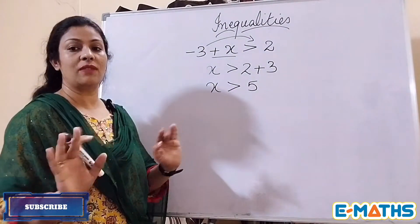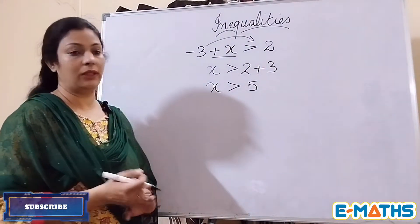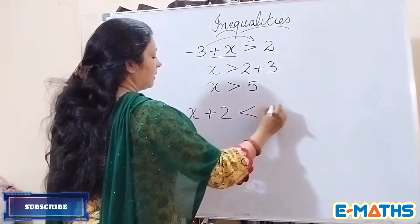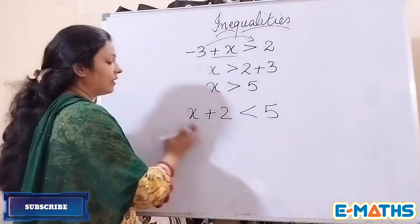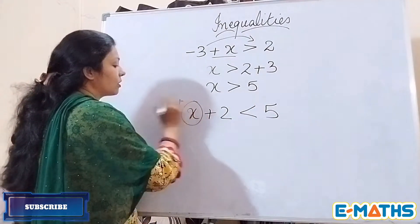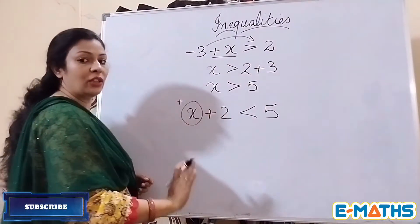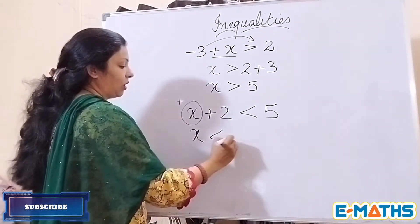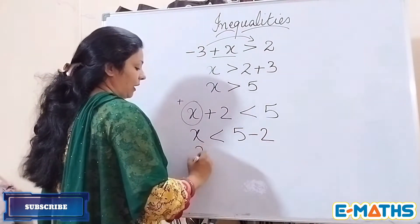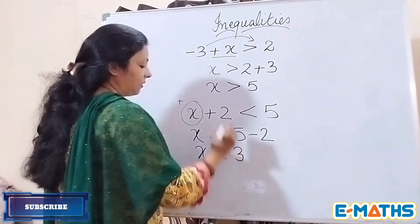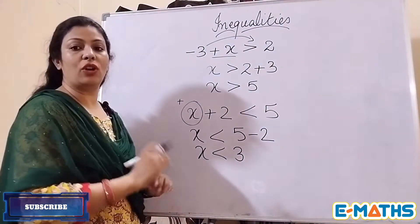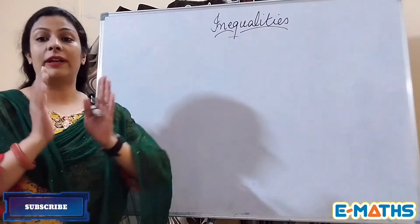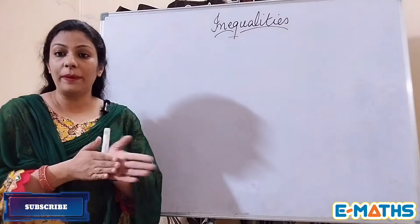Similarly, if we have 2x plus 2 smaller than 5, our variable is positive so the sign of inequality is not going to change. We transpose 2 to get x smaller than 5 minus 2, so x is smaller than 3. We simply solved both equations without changing the sign of inequality.